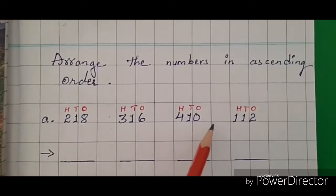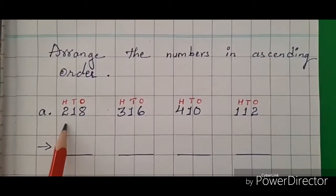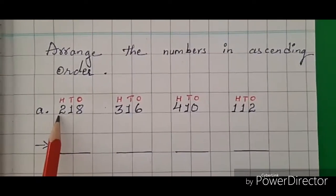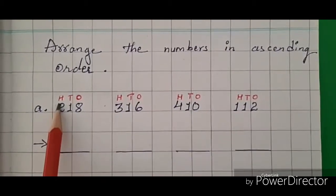Here we have to arrange the numbers in ascending order, means number from small to big. Let's solve this question. First compare the numbers of hundreds place. Can you tell me which number is small in the hundreds place?